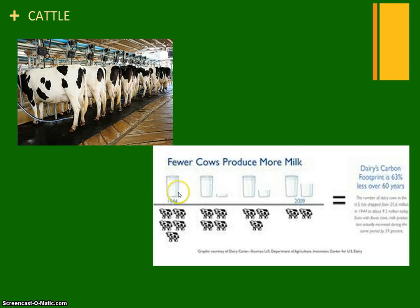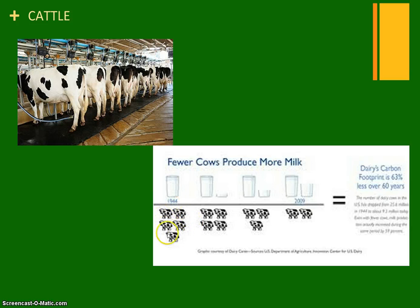In 2009, it only takes two cows to produce one and a half times as much milk. So we have three fewer cows producing 63 percent more milk. If you were a farmer taking care of only two cows, it would be a lot less expensive than taking care of five — they need less space, less food, and they can produce just as much, so the farmer gets to make a lot more money.